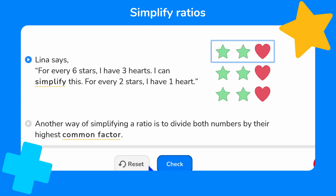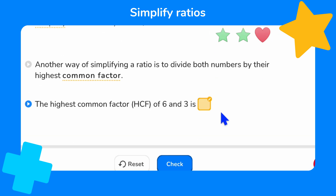Now Lena says: for every six stars I have three hearts. I can simplify this — for every two stars I have one heart. We are told that another way of simplifying a ratio is to divide both numbers by their highest common factor. This is something we practiced at the beginning of this lesson in the connect section.